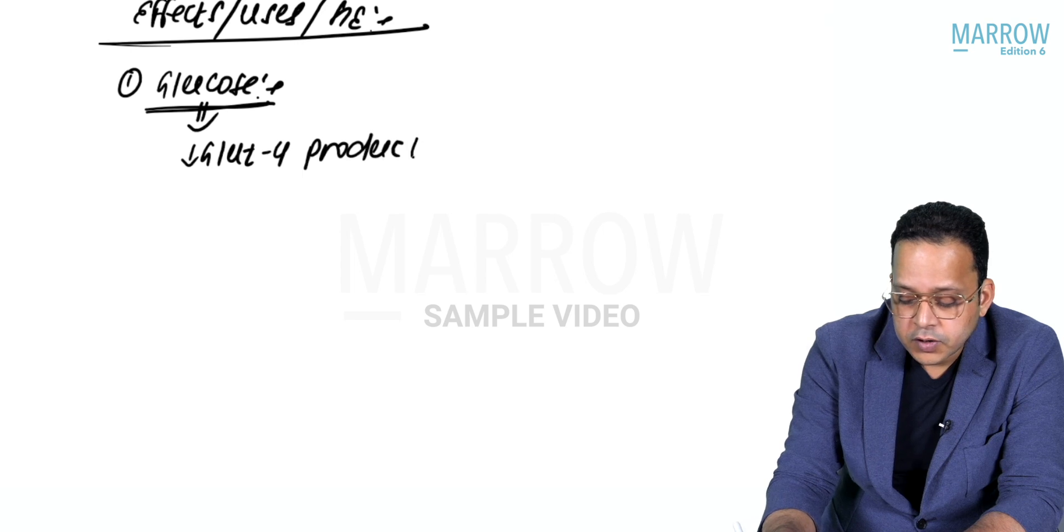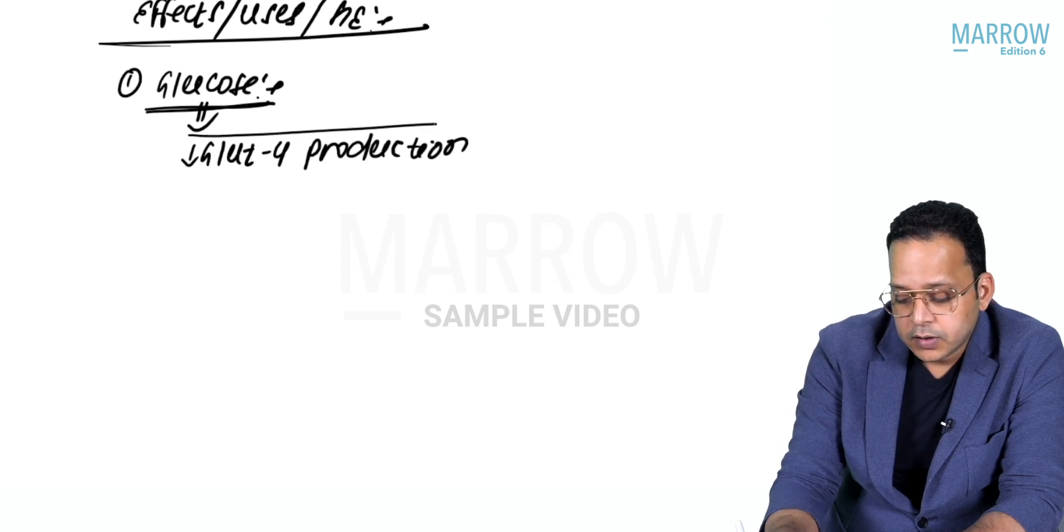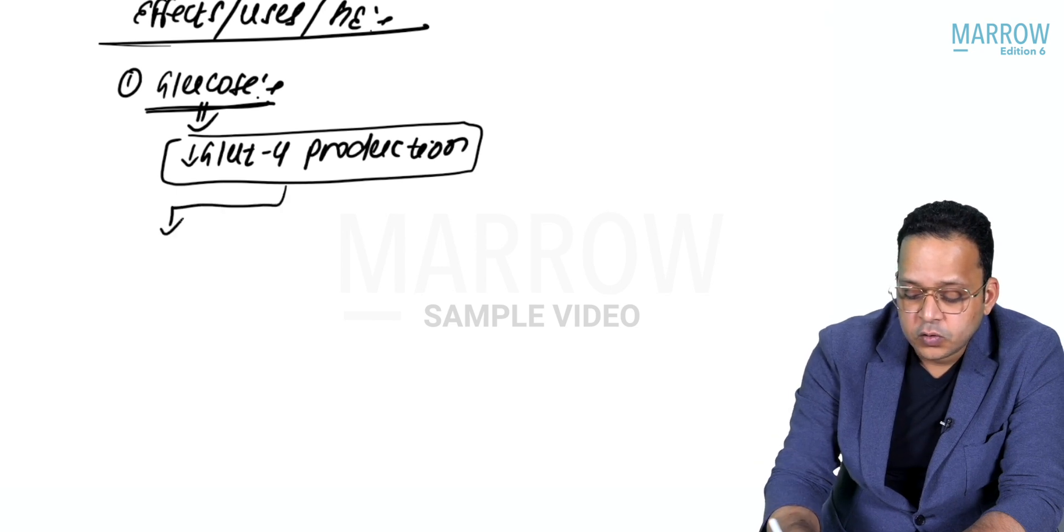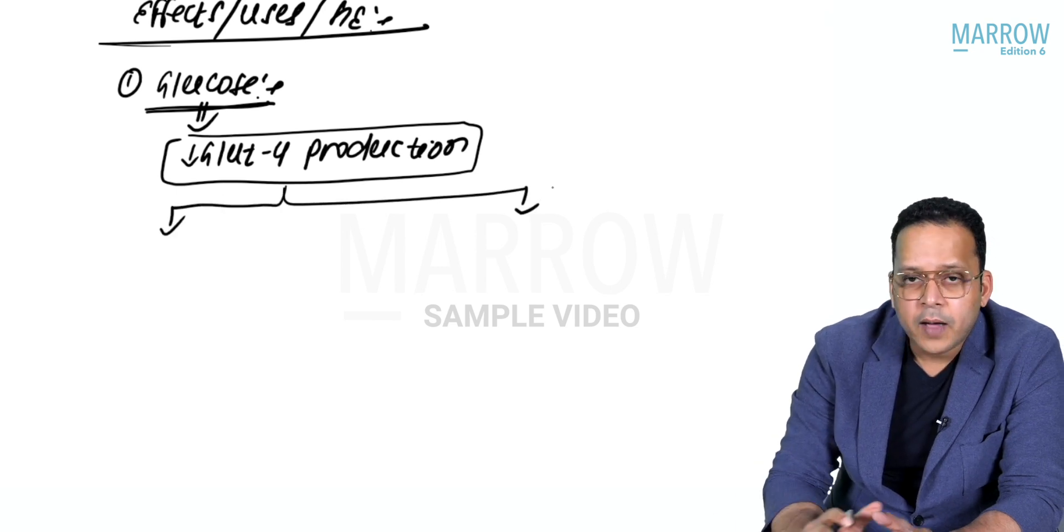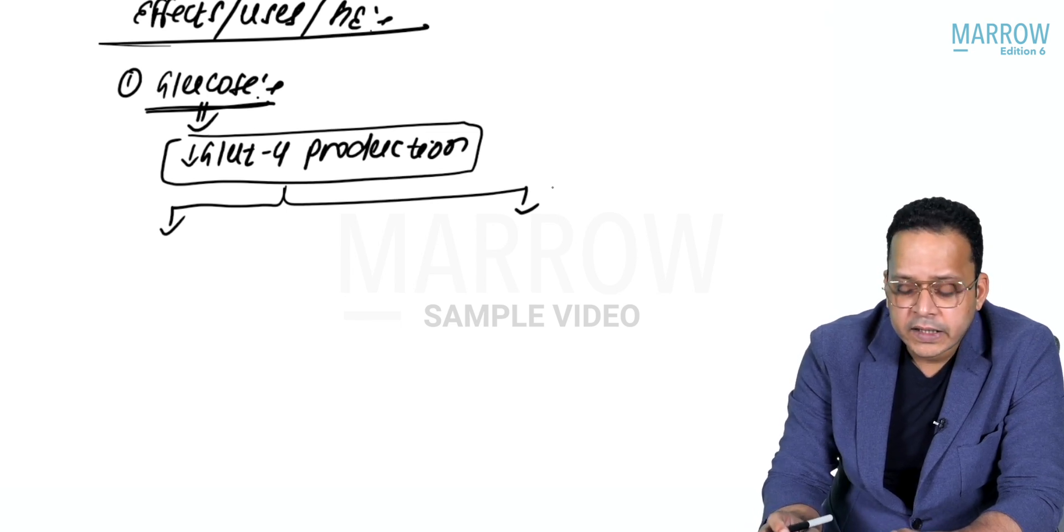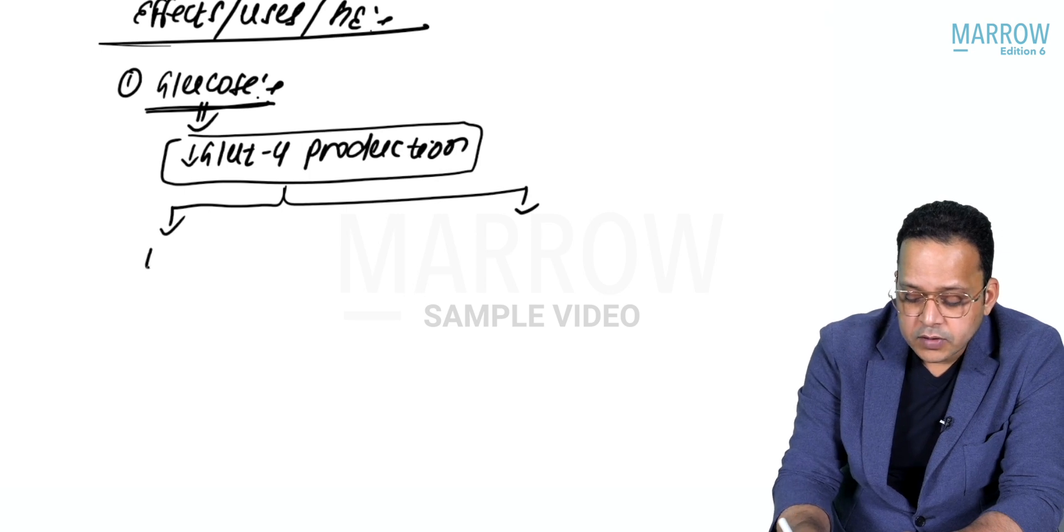Steroids act upon nuclear receptors, they switch off the genes for GLUT4 production. Now there is decreased GLUT4 production. What happens in my body? Let us try to understand - if GLUT4 production decreases, what happens in my limbs?